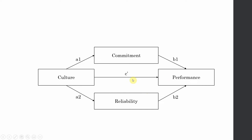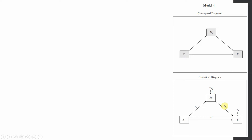Let's say we are going to test this particular model. We have one IV that is culture, one DV that is performance, and two mediating variables. The path from culture to commitment is named a1, and the path from commitment to performance is b1. Multiplying a1 by b1 gives the indirect effect from culture to performance through commitment. The direct effect in the presence of the mediator is c-prime. The path a2 goes from culture to reliability, and b2 goes from reliability to performance.